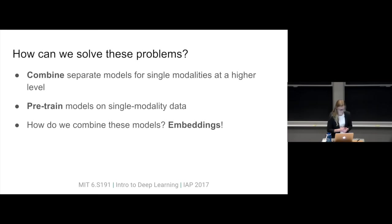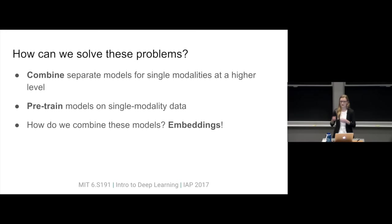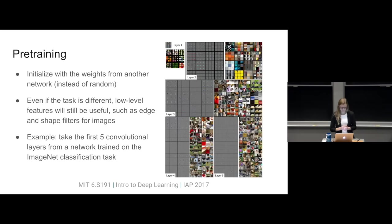There are some things we can do to solve multimodal learning problems. The first general approach is to combine separate models that are on single modalities at a higher, more abstract level. This allows us to pre-train different parts of the model on single-modality data, which we might have in much more abundance. For example, we might have tons of images, but only some of them are tagged. The way we're going to combine these is using embeddings.